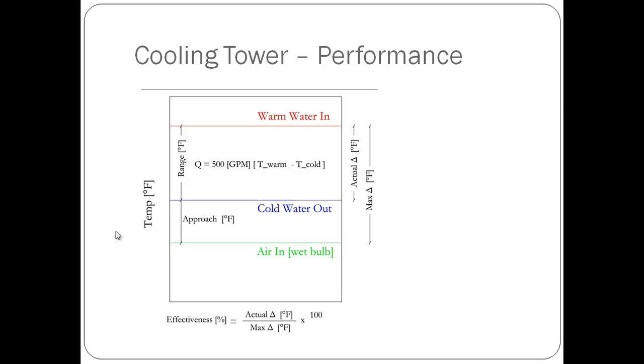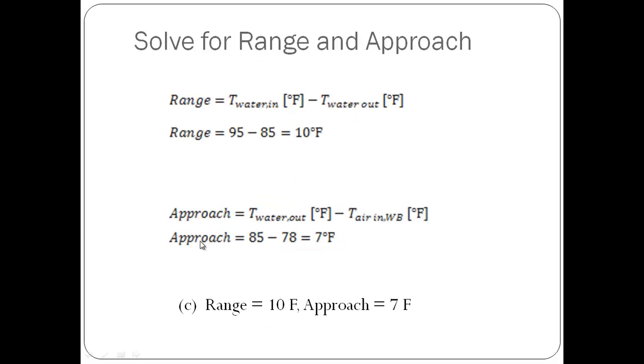So let's solve our problem by plugging the values into the equations. For range, we get 95 minus 85 equals 10 degrees Fahrenheit. For approach, we get 85 minus 78 as the wet bulb...